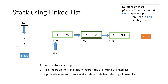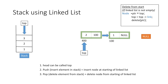So suppose if we have to pop the element 3 from the stack, we create a pointer ptr and equate it to top, then we make top equal to the link part of the first node, that is 400. So now top is pointing to the second node in the linked list. Now as we have adjusted the top pointer, we can delete the first node using the pointer ptr. So now our stack only consists of two elements, 1 and 2, and our top pointer points to the element 2.